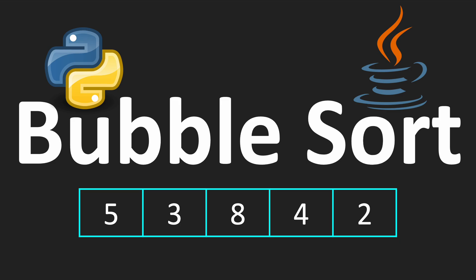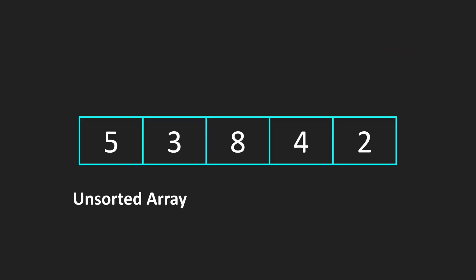Hi everyone, it's Sorkin. Today we are going to look at the bubble sort. So let's first start with the example. Let's say we have an unsorted array and we want to sort our array in ascending order.